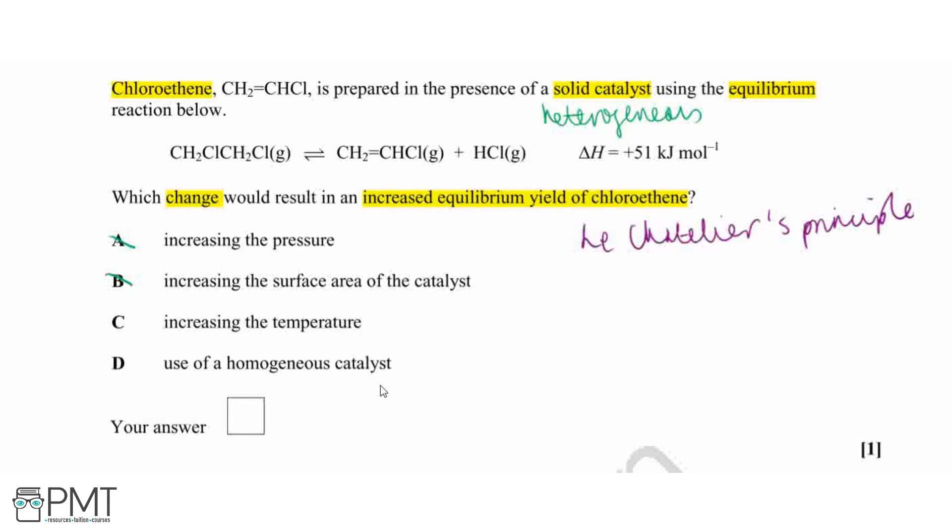And using a homogeneous catalyst will not have an effect in the sense of increasing our equilibrium yield of chloroethene because it will affect both the forward and the reverse reactions. So it will not favor one reaction over the other.